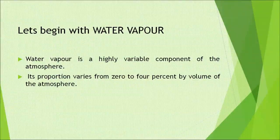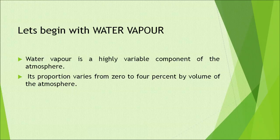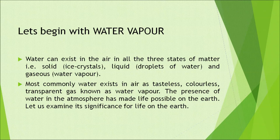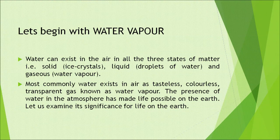Let's begin with water vapour. Water vapour is a highly variable component of the atmosphere. Its proportion varies from 0 to 4% by volume of the atmosphere. Water can exist in the air in all three states of matter: solid (ice crystals), liquid (droplets of water), and gaseous (water vapour). Most commonly, water exists in air as a tasteless, colourless, transparent gas known as water vapour. The presence of water in the atmosphere has made life possible on the earth.